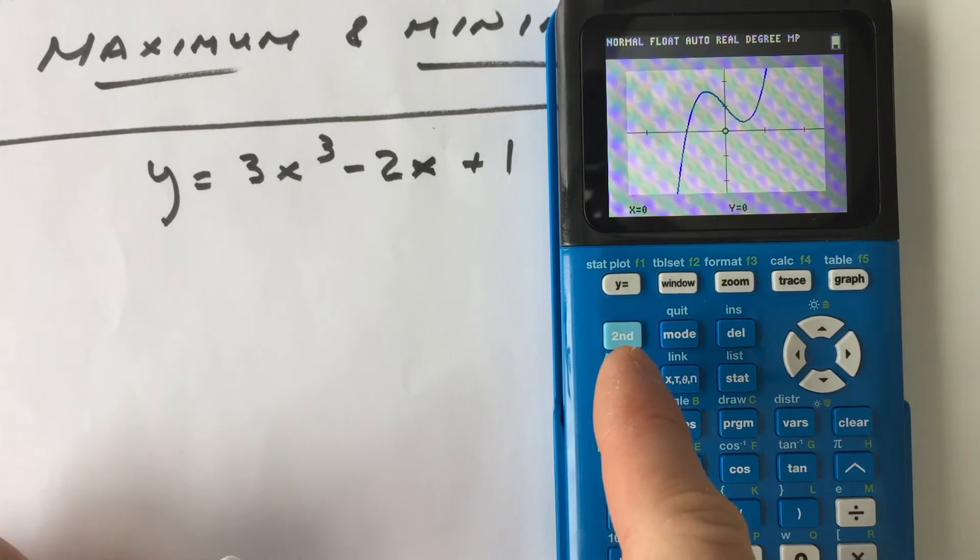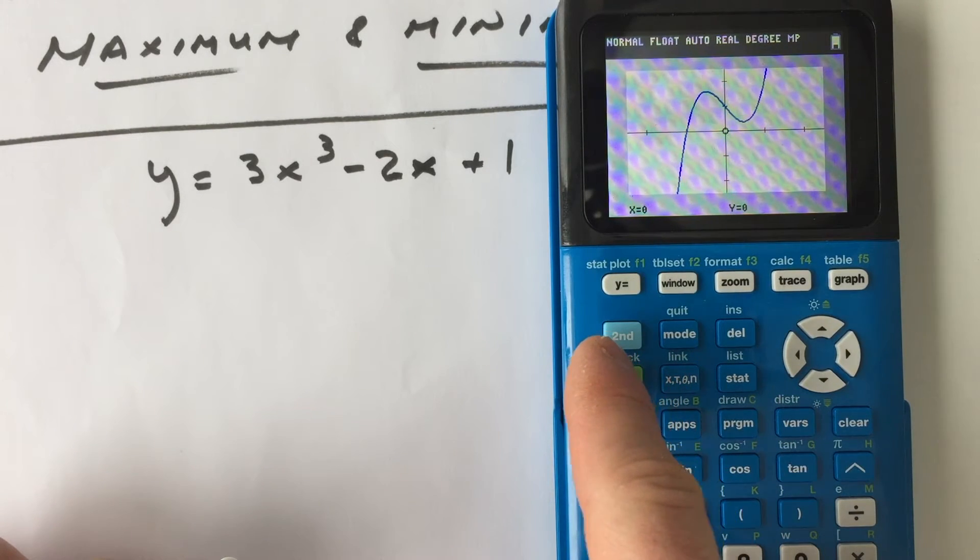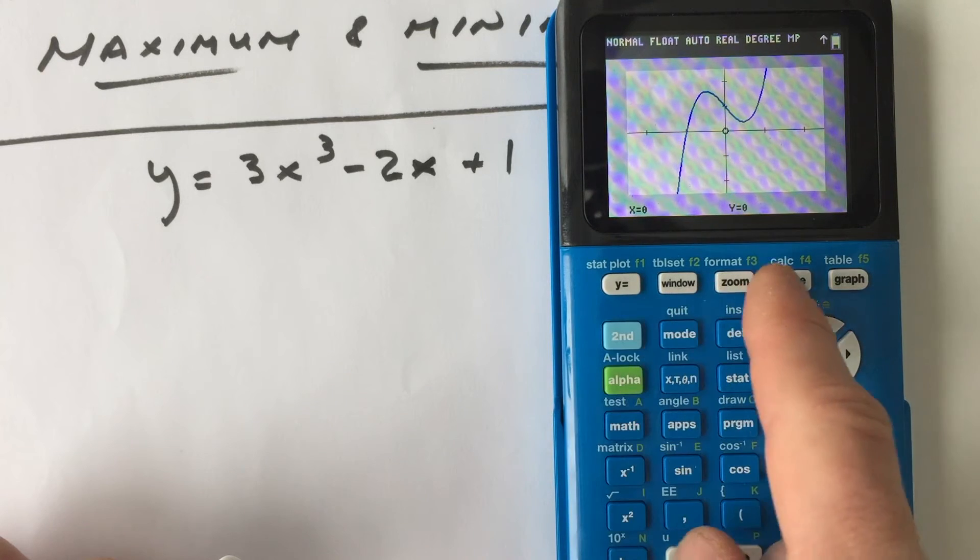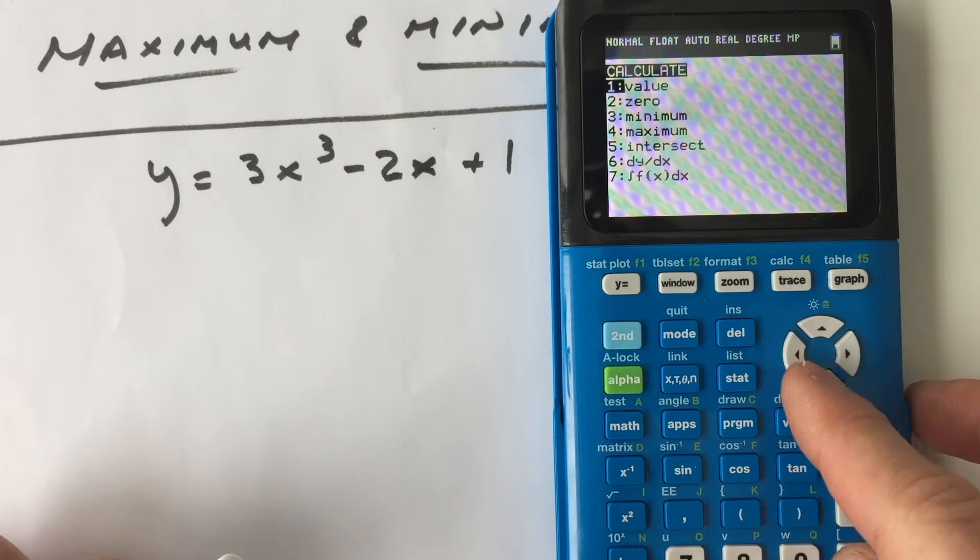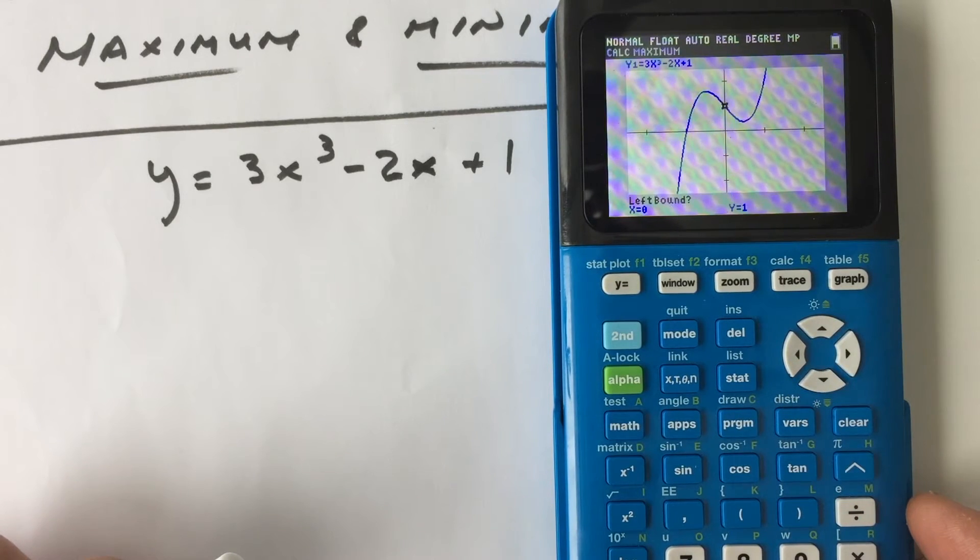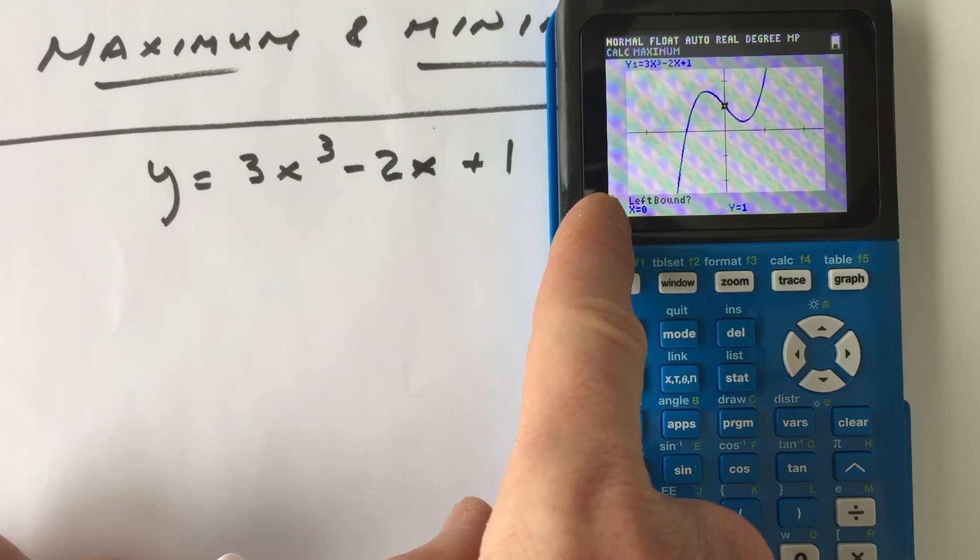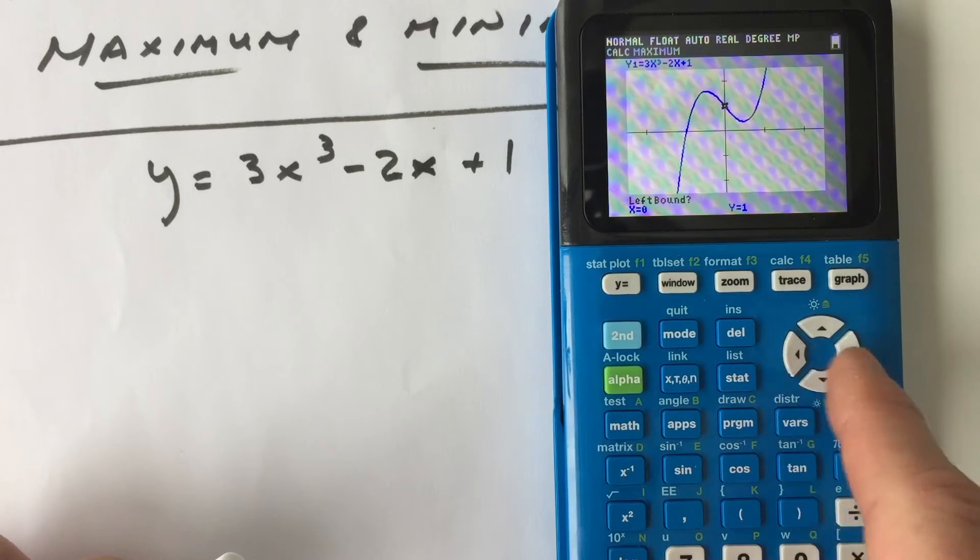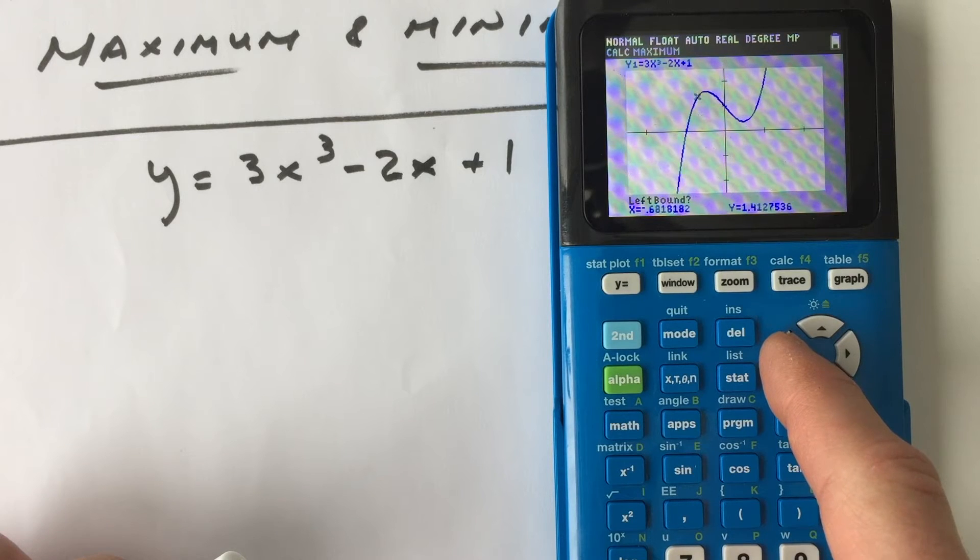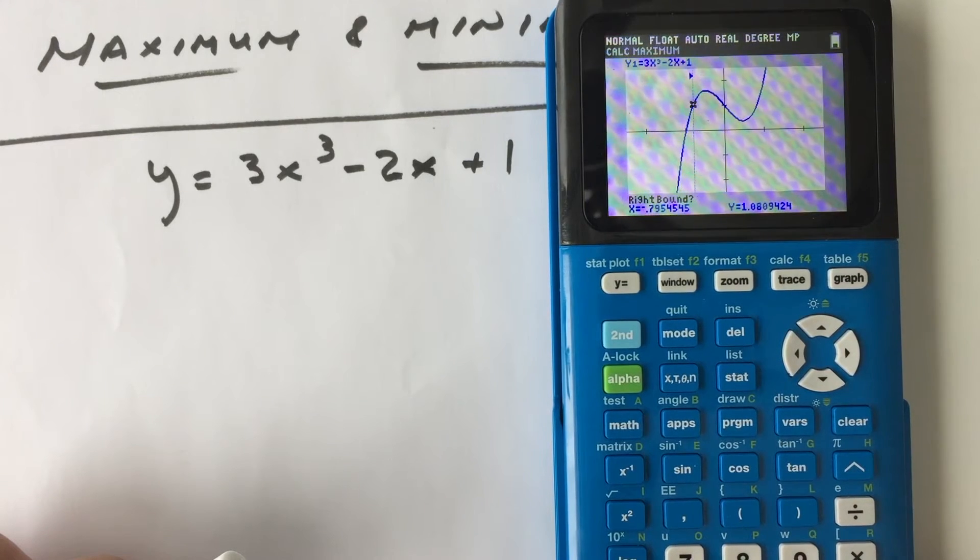So what we're going to do now is let's go ahead and find the coordinates of the relative maximum. Go over here to second, hit your second key here on the left, second, calculate, which is right above trace. And then you want to select maximum number four, enter. Now you see here how it says left bound in the lower left-hand corner. So you can use these left and right arrow keys. You want to arrow a little bit to the left of that high point and press enter in the lower right-hand corner of your calculator.